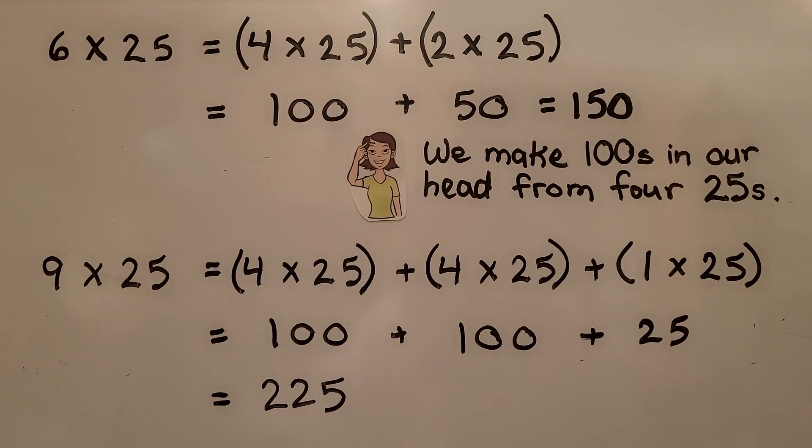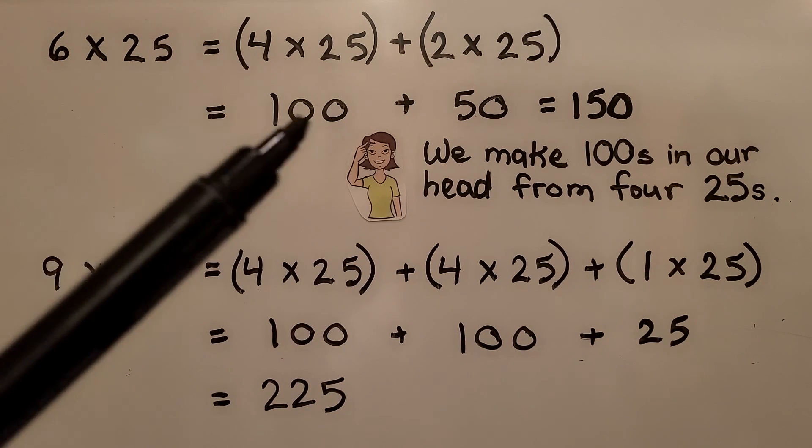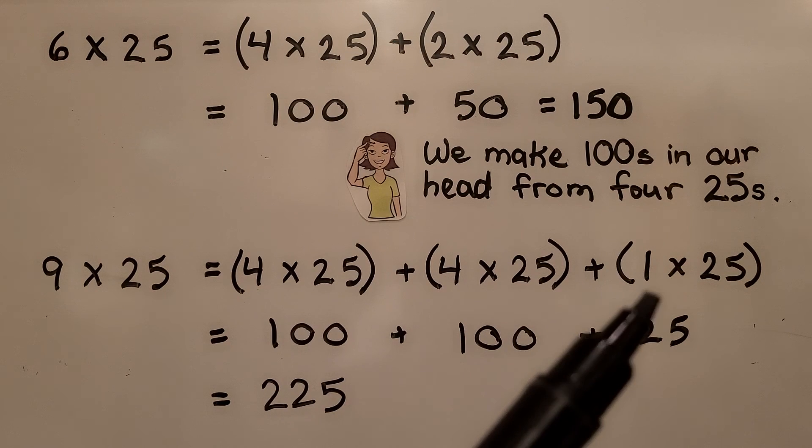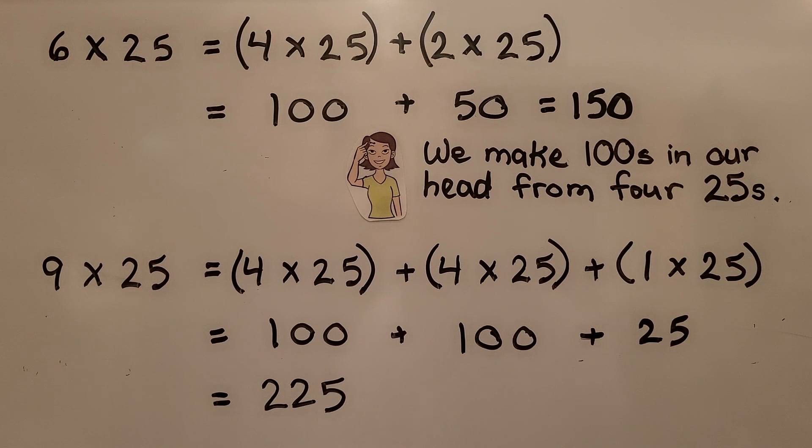Now notice how when I did this multiplication, I broke the six apart into a four and a two and multiplied the four times 25 and the two times 25. When I wanted to multiply by the nine, I broke that into a four, a four and a one because four plus four plus one is equal to nine. And we were able to do multiplication by breaking this nine into smaller factors.